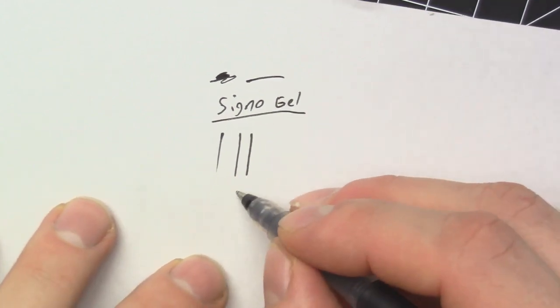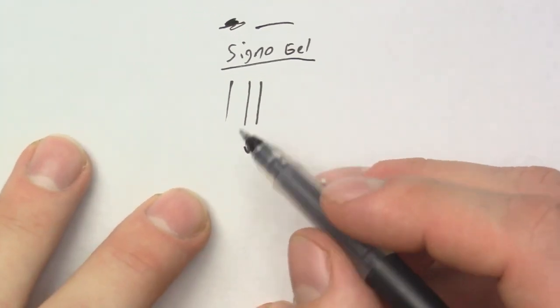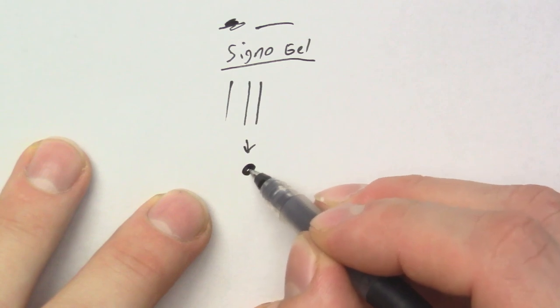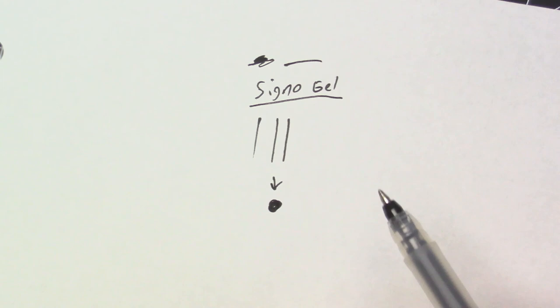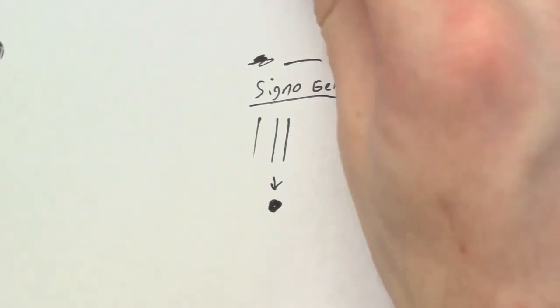Now let's go ahead and see if there's any reflection of light off of it. And then after this we will write with the Uniball Air and see what that is like.